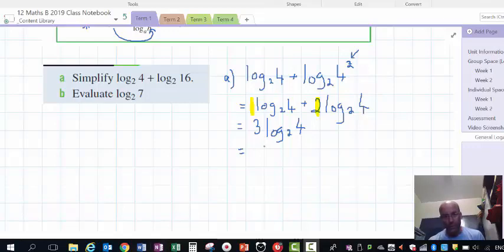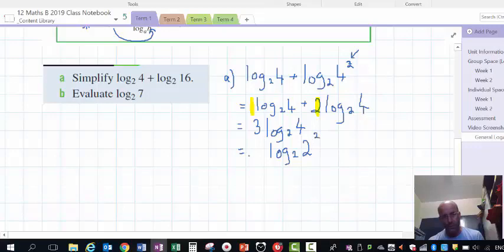But there's more we can do here. So you might be starting to think there could have been a quicker way of doing this, and there is, but this way is pretty easy to understand. So I'm replacing the 4 with 2 squared, and that process repeats again. So that's going to be 3 times the 2 goes to the front, that power 2, and 3 times 2 log 2. 2 log 2 is 1, so it's 3 by 2 by 1, which is 6.